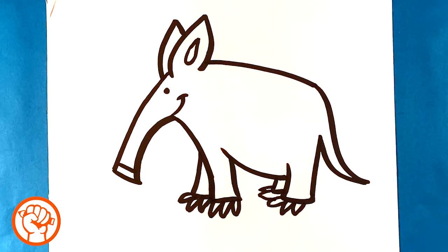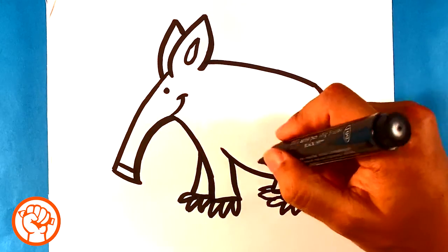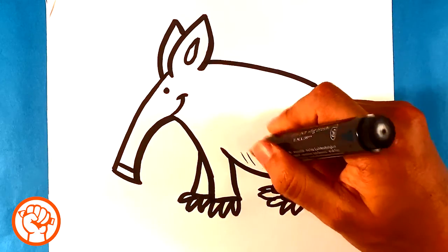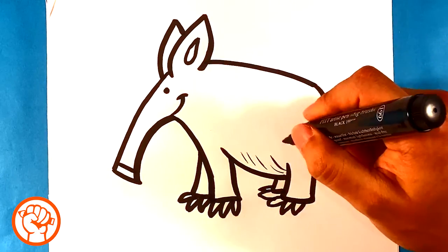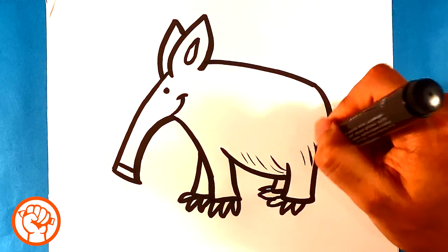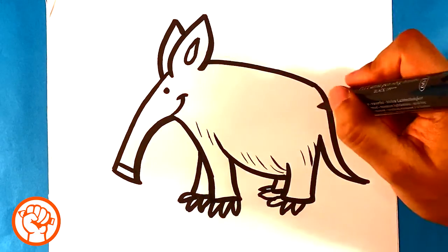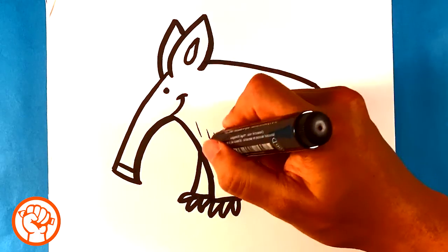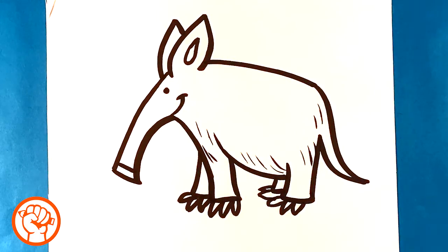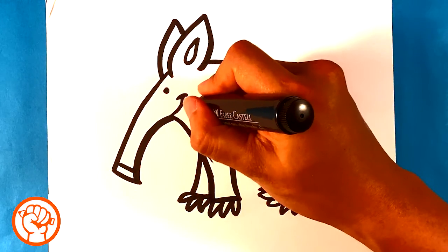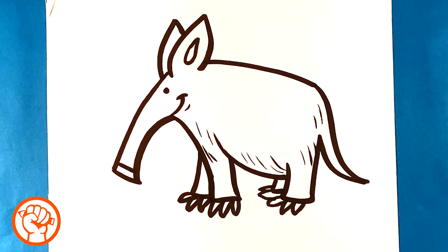And the last thing we're going to do for the aardvark is it kind of has hair, so I'm going to throw kind of some thin wispy directional lines along the back area or the front here. Just really thin, and it kind of gives you the impression that the rest of him is hairy. I might throw a line underneath the mouth and that's pretty much it.